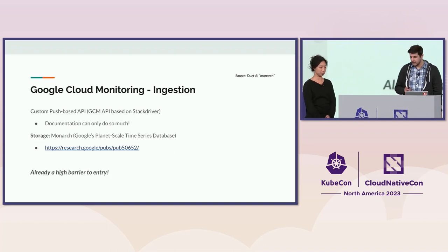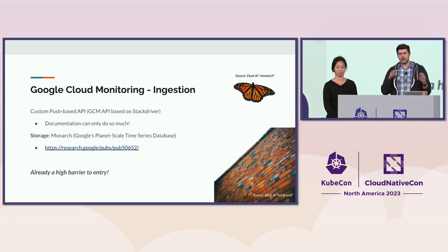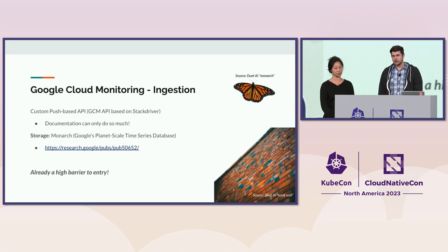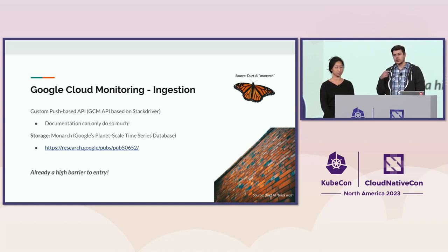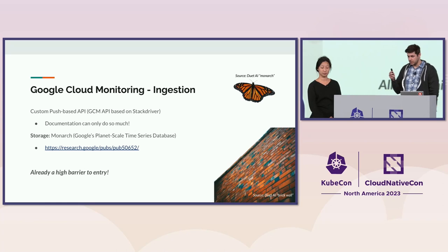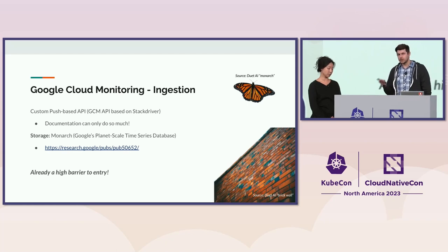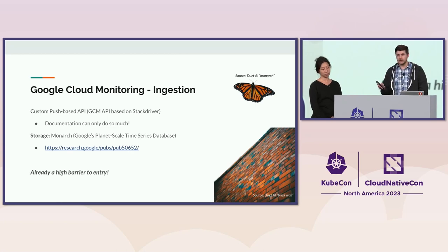Let me show you exactly what I mean. On the ingestion side — the side that exports your metrics and sends them to Google Cloud Monitoring — we had a custom push-based API. If you want to send metrics to Google Cloud Monitoring, you have to import our client SDK, and this is a lot of work you have to do programmatically, so it's a very high barrier to entry. On the underlying storage side we use Monarch, which is Google's planet-scale time series database. There is a paper available if you're unfamiliar.